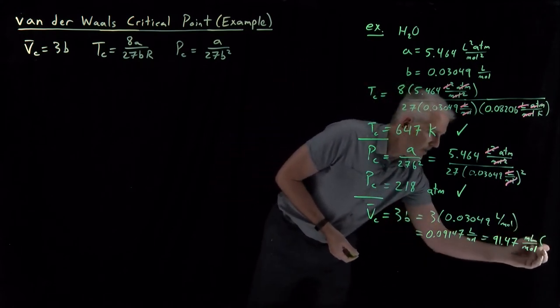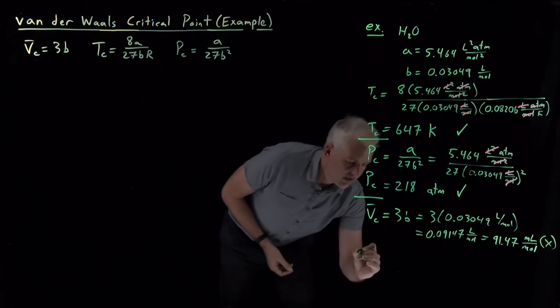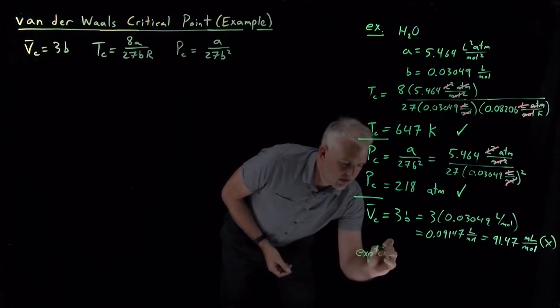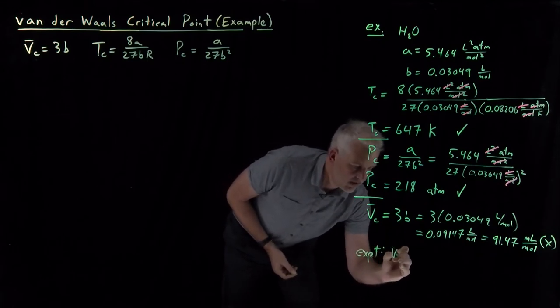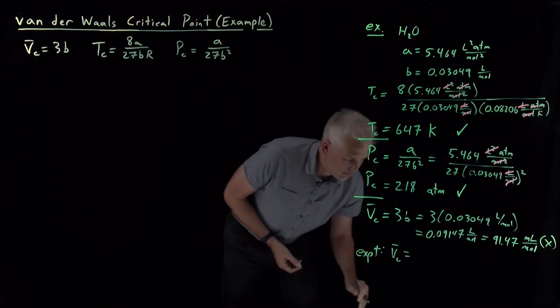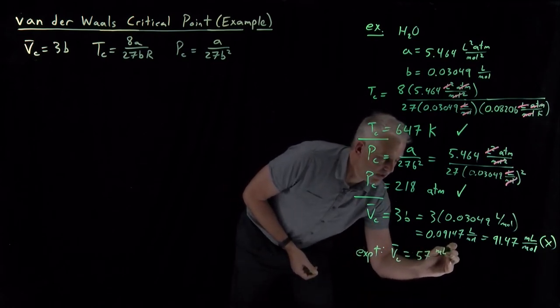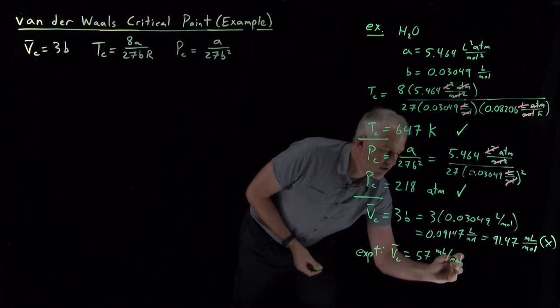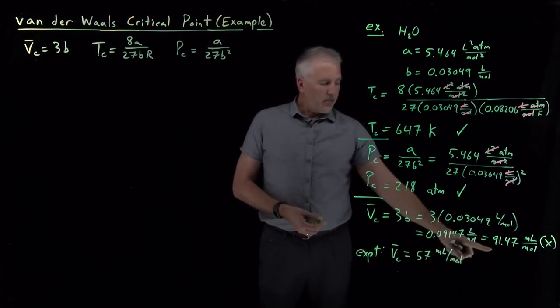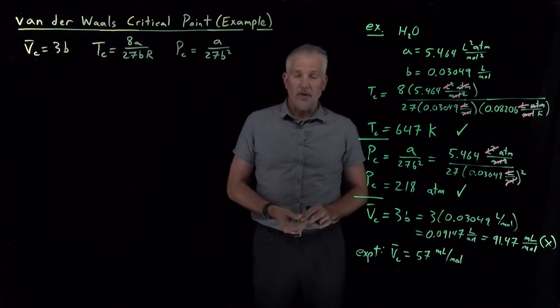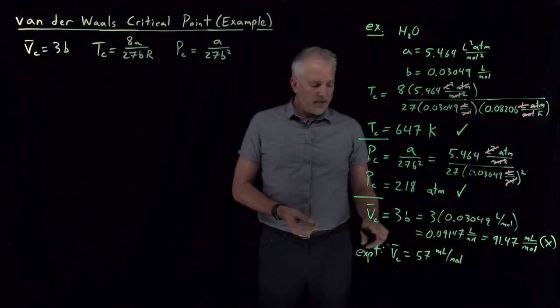Actually, this one is not a terribly good estimate. Experimentally, we find that the critical volume of water is about 57 milliliters per mole. So now it seems like the Van der Waals equation has done a much worse job at predicting the critical volume. It turns out there's a good reason for that.